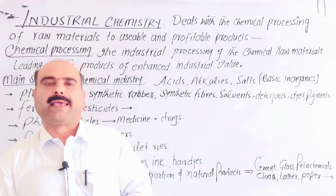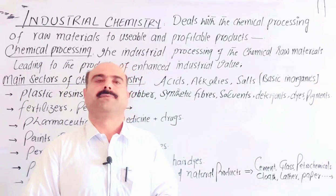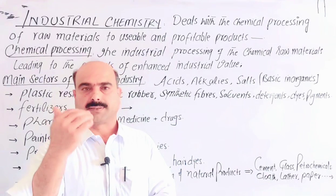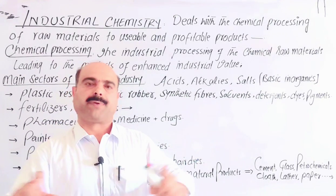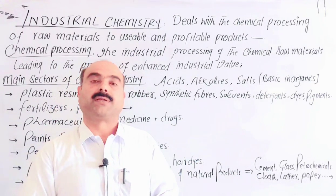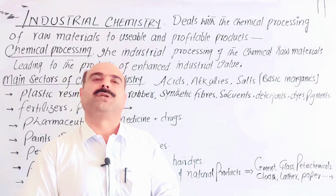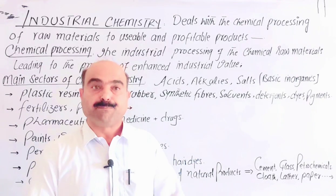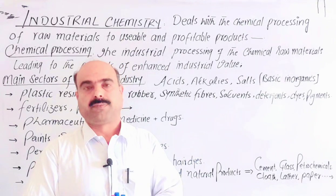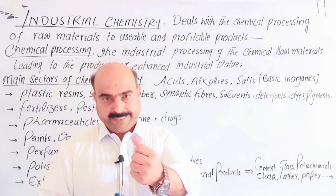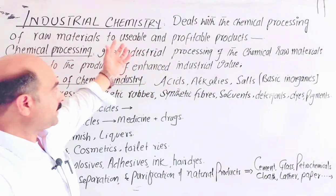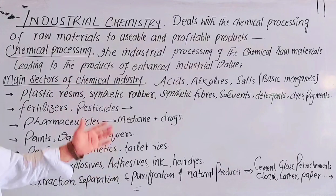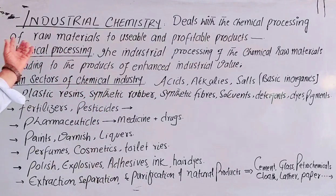Similarly, in the cement industry we produce cement, quick-setting cement, and dam-grade cement. Glass is produced and prepared in industry. Paper industry is a large industry. Similarly, leather industry is also a large industry. Dear students, these are all the basics of industrial chemistry. For detail, I have summarized these things in front of you on the whiteboard. So, going towards this whiteboard.